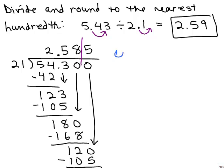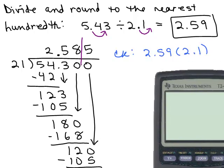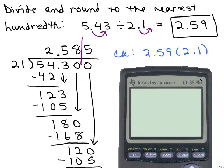Remember how to check it. You want to multiply 2.59 times 2.1, and since we rounded, we shouldn't get exactly the same answer. I'm going to go ahead and do it on a little calculator right here.